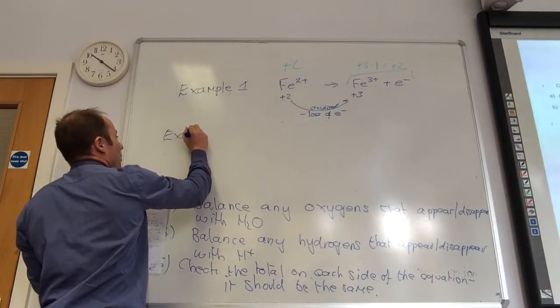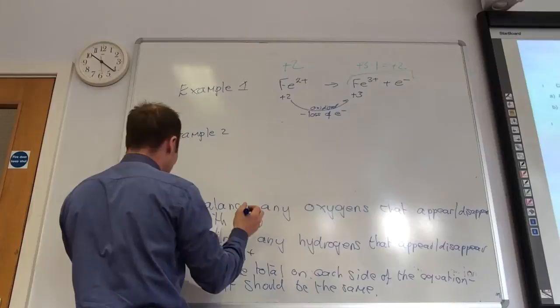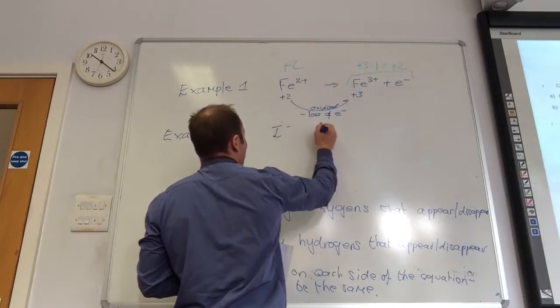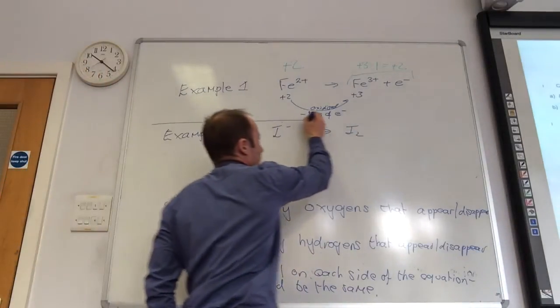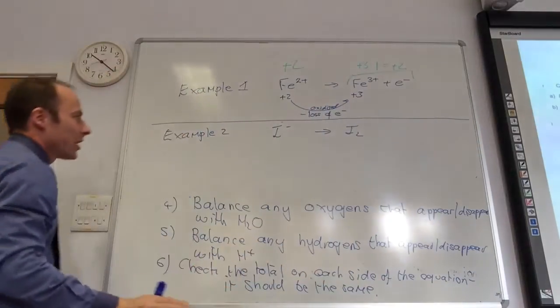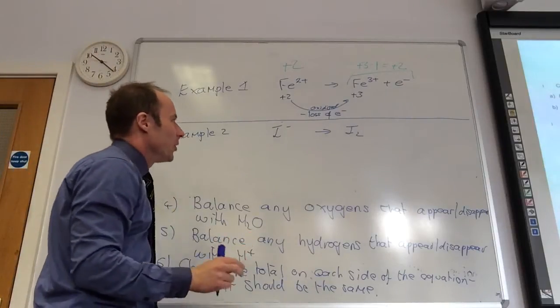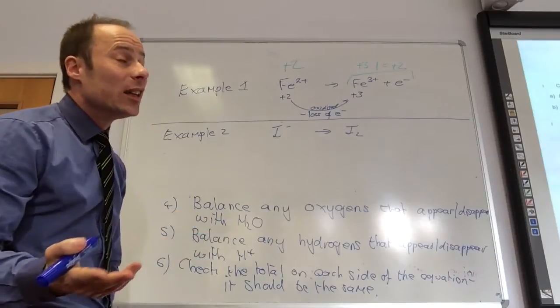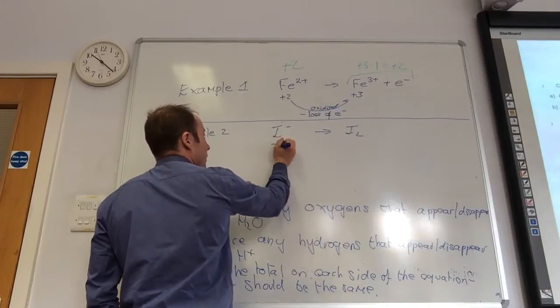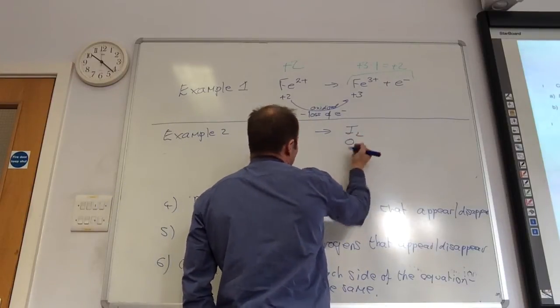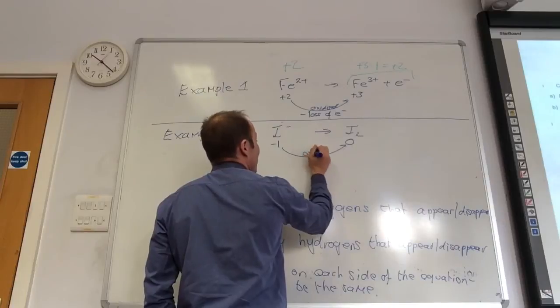So, let's do example number two. Slightly harder. We are going to have I- going to I2. Once you're happy, carry on, stop listening. So, I- going to I2. First of all, only iodine's in there, but let's do it anyway. Iodine's oxidation state here? Minus one. What about this guy? Zero. Fabulous. So, it's obviously iodine has been oxidized again.